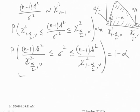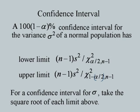This leads to the 100(1 minus alpha)% confidence interval for sigma-square. The lower limit is (n minus 1) S-square by chi-square-alpha/2,n-1 and the upper limit is (n minus 1) S-square by chi-square-(1 minus alpha/2),n-1. To find the confidence interval for sigma, we simply take the square root of these two limits.